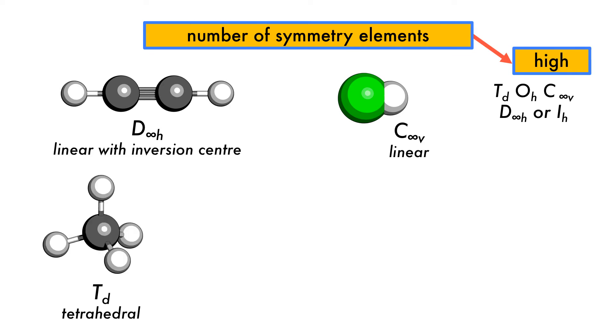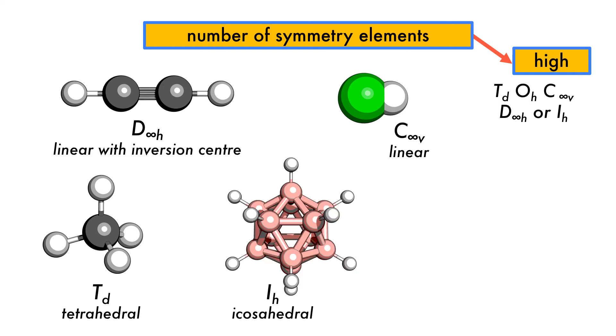Td, tetrahedral, as we learned earlier, can be represented by methane as a prototypical tetrahedral molecule. IH is icosahedral, represented by the dodecaborate anion. Then the final group we have here is the OH octahedral group, represented here by sulfur hexafluoride.